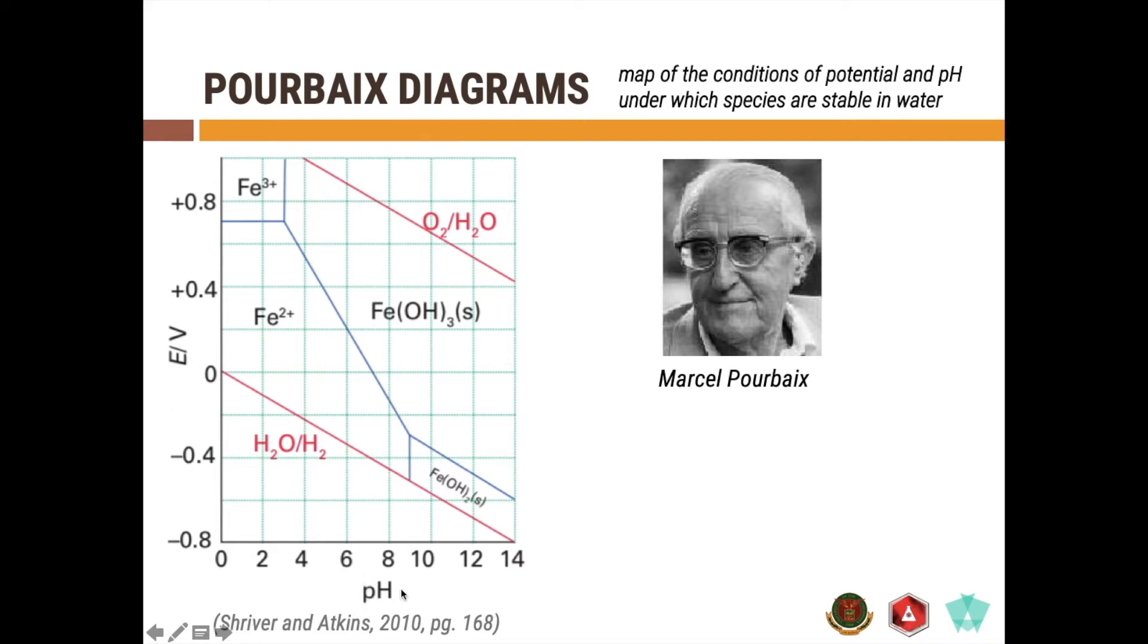This is different from your Latimer diagram and your Frost diagram wherein you already have a set pH values. In these diagrams, you can see that you actually have a changing pH across the graph. As you can see, you have a couple of lines here in this diagram. This is the simplified Pourbaix diagram for the iron species in aqueous solution.